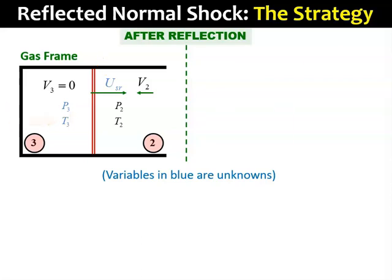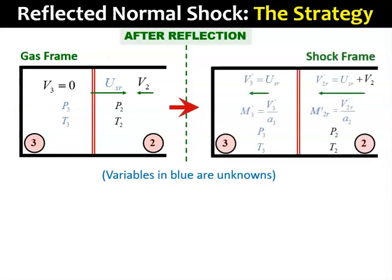After converting into the shock frame, we can see that the variables are rewritten as shown here on the right. The remaining unknowns are v3 prime, v2r prime, m3 prime, and m2r prime. Since we don't have any parameters that gives us any information about the strength of the shock, we cannot solve the problem directly. So, we have to resort to an indirect process.